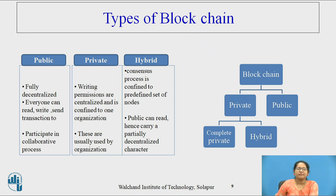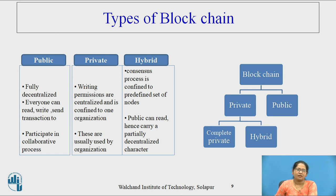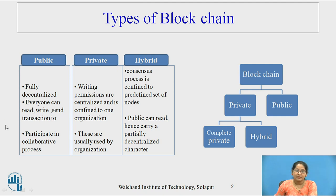Blockchain is mainly divided into private and public. Private is further divided into completely private and hybrid. Public blockchain, as the name suggests, is publicly available and fully decentralized. Everyone can read, write, and send transactions to that particular block, and nodes participate in a collaborative process for decision-making. There is no restriction on access.